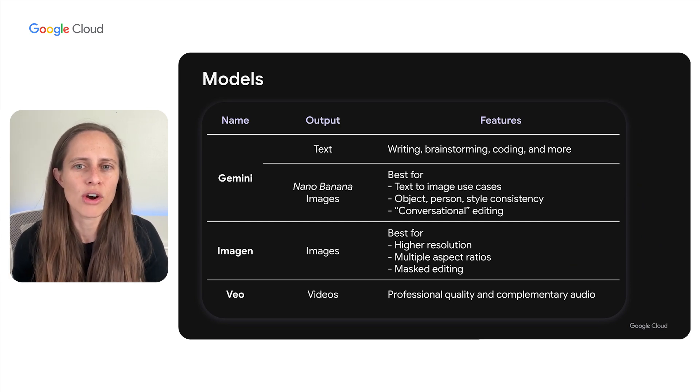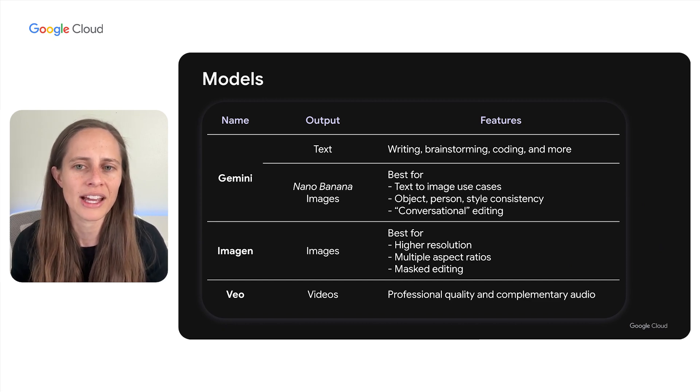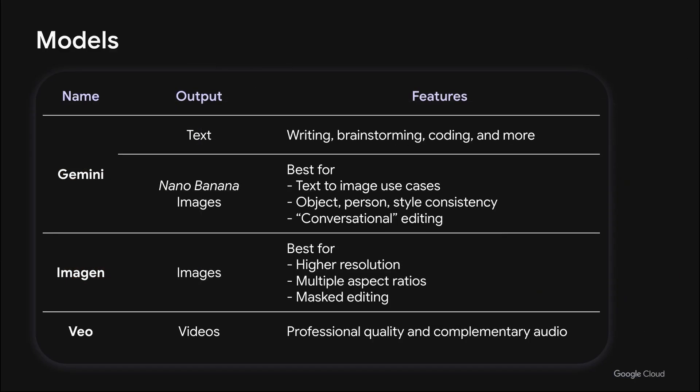Gemini is Google's overarching name for a family of models. When generating text, it is commonly used for writing, brainstorming, coding, and more. If you've heard about our image model with the funny code name, Nano Banana, that also happens to be a Gemini model that outputs images. Formally known as Gemini 2.5 Flash Image, this model is best for text-to-image use cases, object, person, and style consistency across frames, and conversational editing with sequential updates.